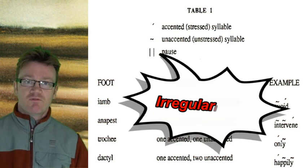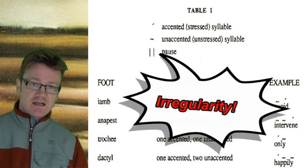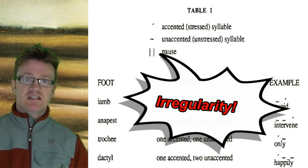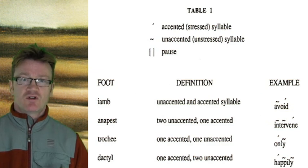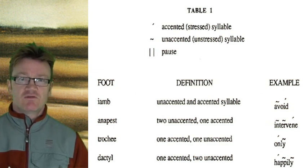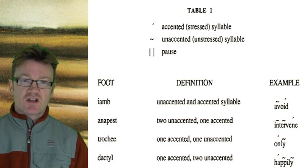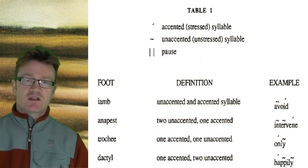And the other type of falling rhythm is the dactyl, which is dum-de-de. Again, creating a falling sensation, often creating a sense of irregularity, uncertainty in a particular line.